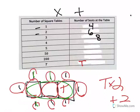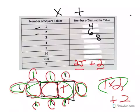So think about it. If we have three tables here, if we have three tables here, that's three times two, one, two, one, two, one, two, plus the two on the end. So we know we can't write T times two, that's confusing, but we can write 2T plus 2. So you see it's a combination of multiplication and addition.